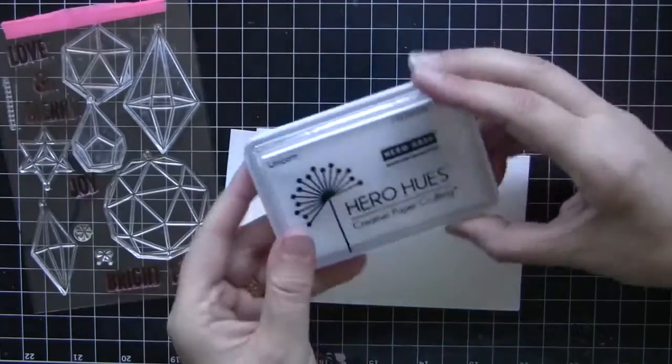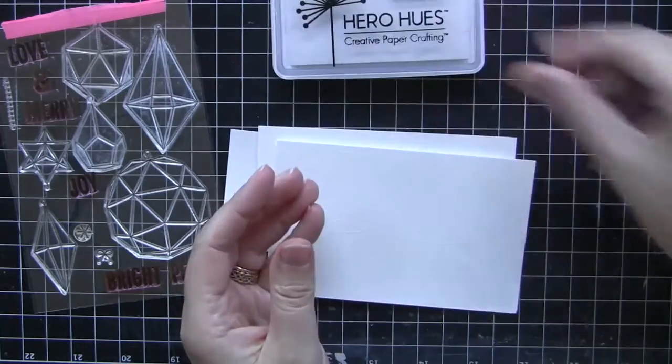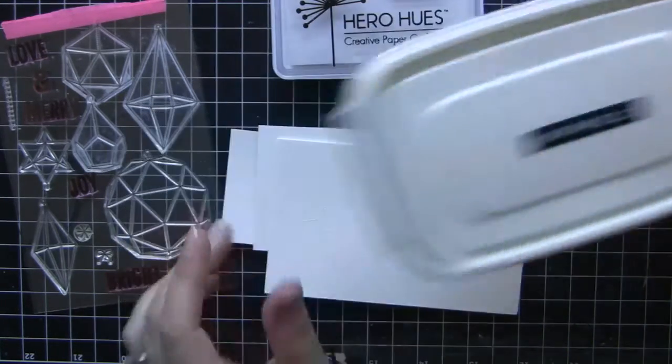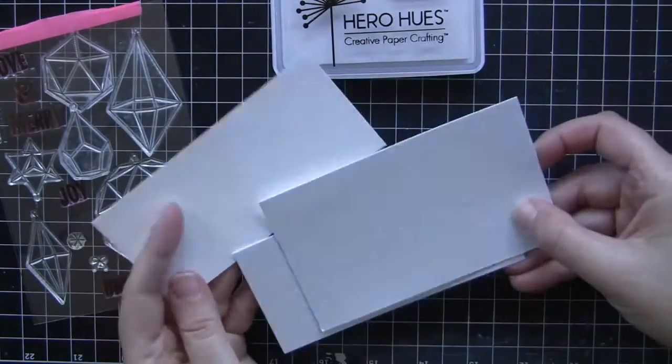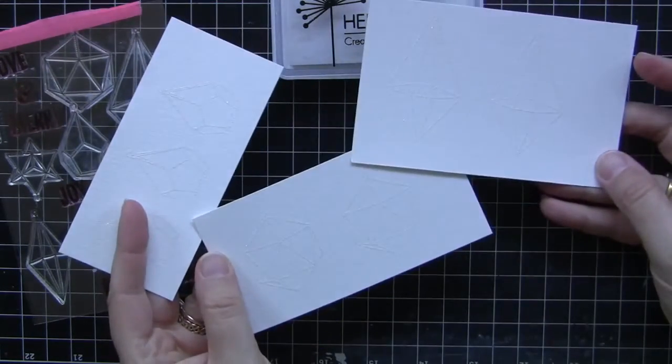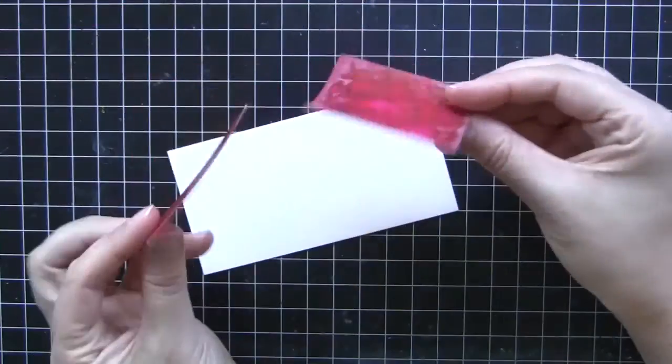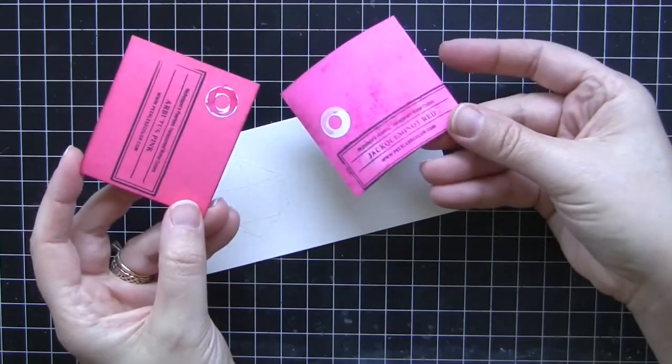I started out by stamping the crystals with the Hero Arts Unicorn White Pigment ink and then I embossed them with sparkle embossing powder, also by Hero Arts. I know you can't see this right now but they are heat embossed on there with the sparkle powder. Today I'm going to be using these peerless watercolor sheets.